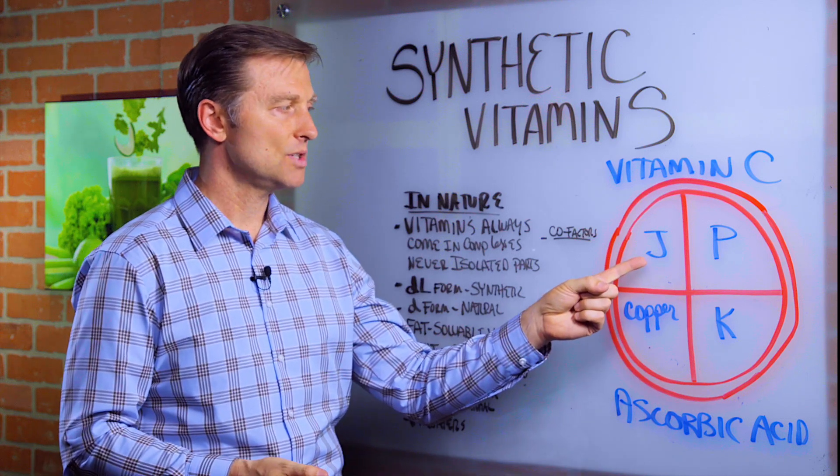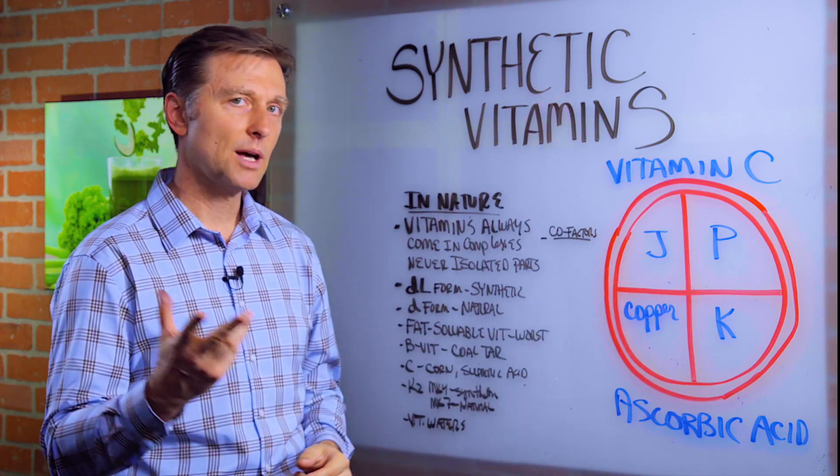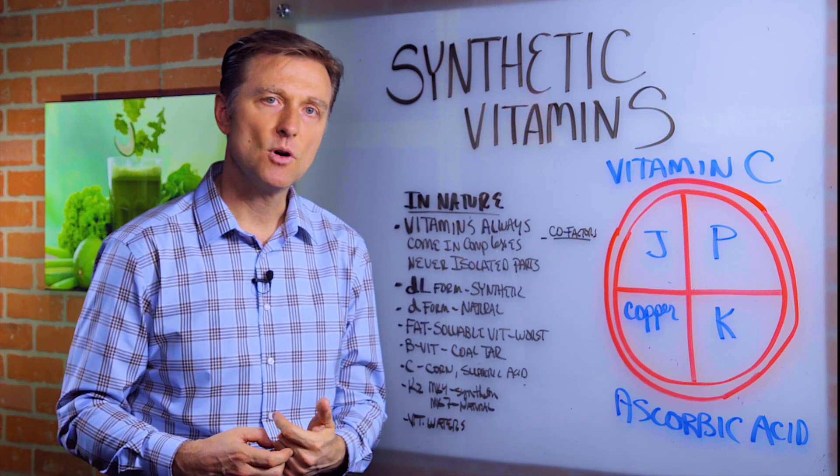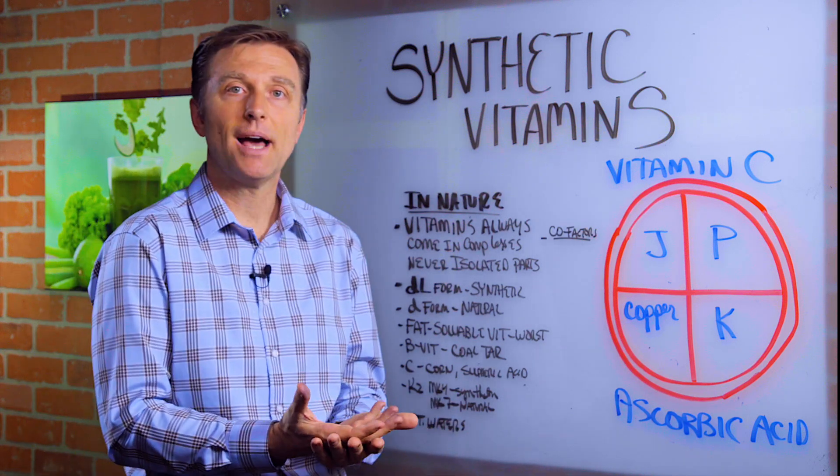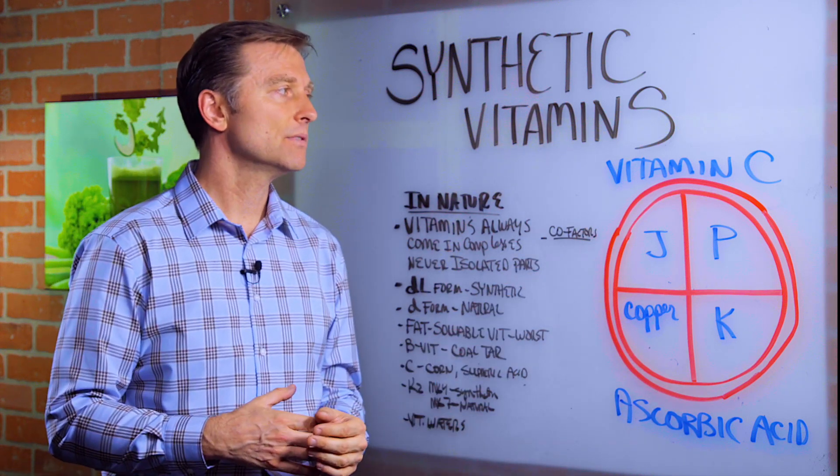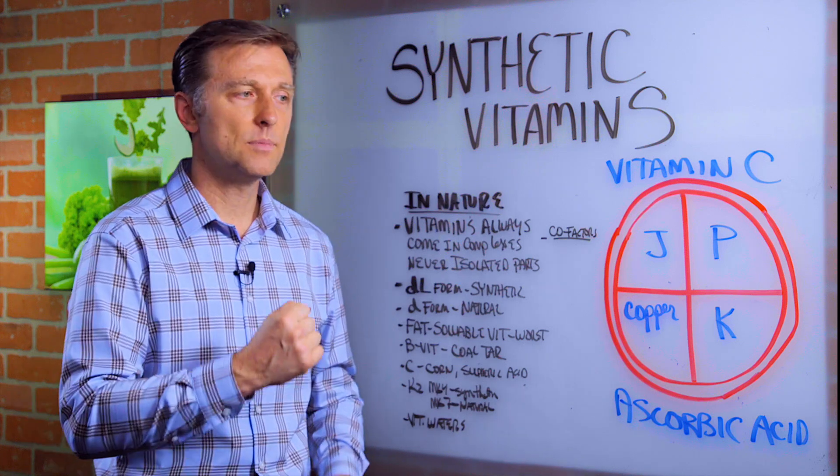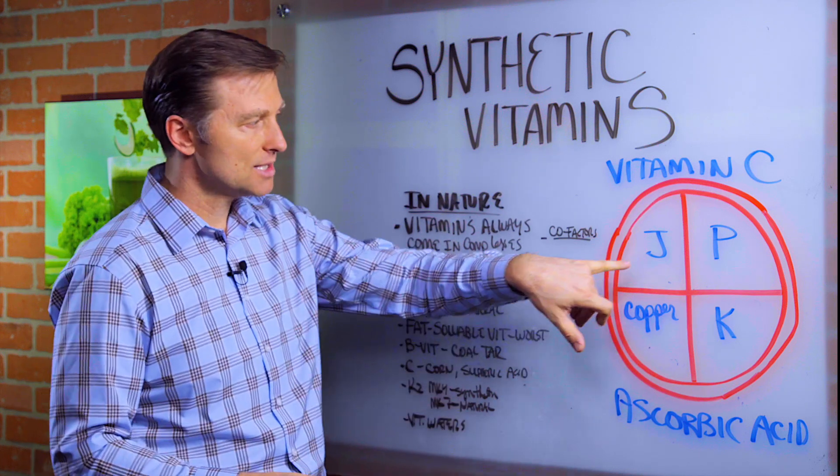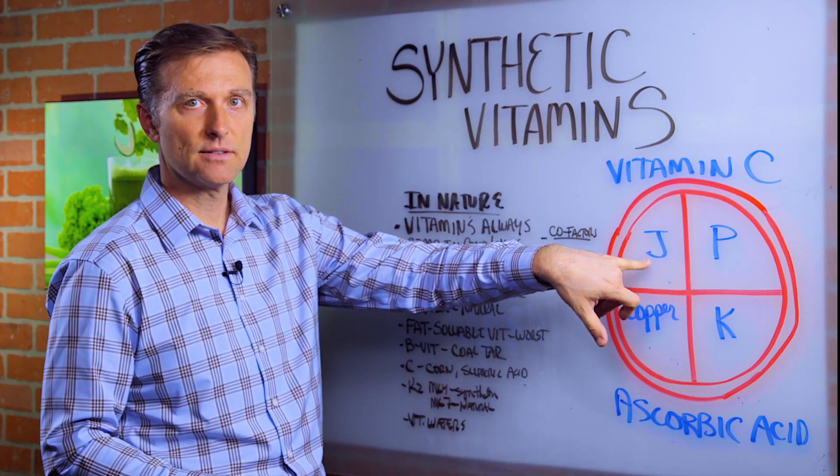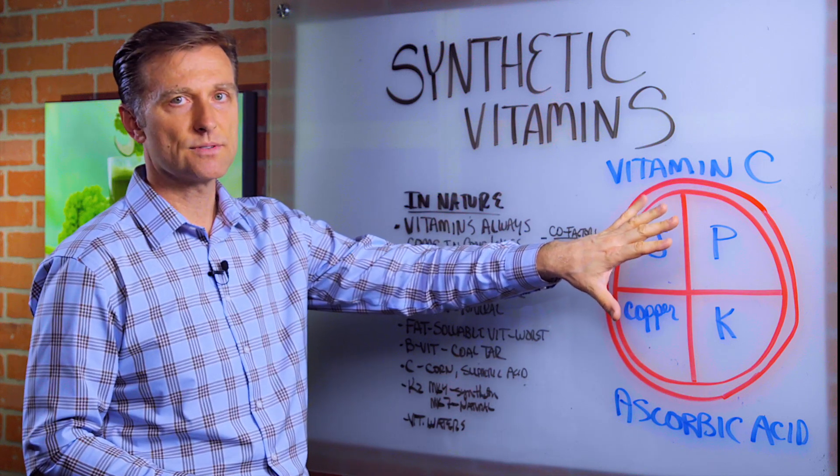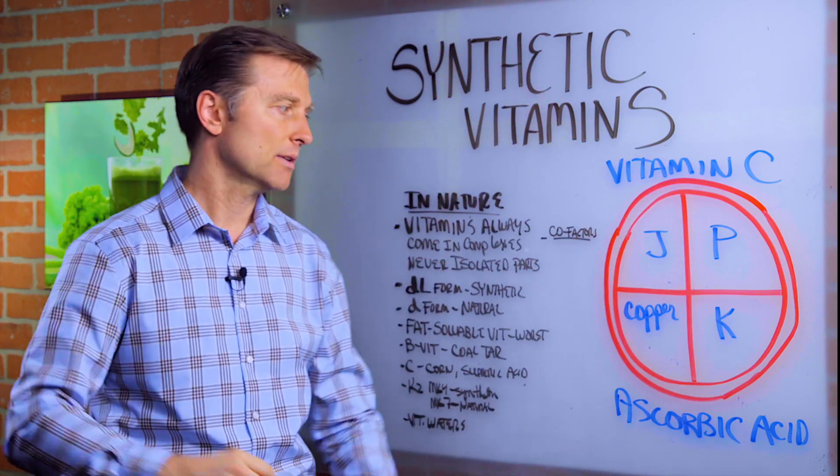You have the J factor, which is vitamin J, which you probably haven't heard of, but that's the anti-pneumonia vitamin. That increases oxygen carrying capacity. Let's say, for example, you're deficient in vitamin C and you go upstairs and you get out of breath easily. It's because you need this. Vitamin C is stored in the adrenals. So there's a connection between vitamin C and adrenal health.